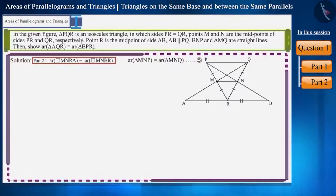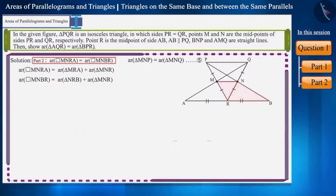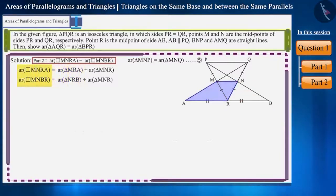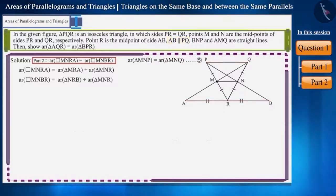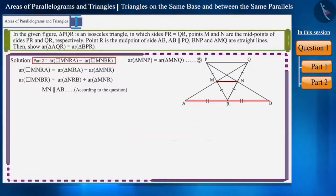Friends, if you look at these two quadrilaterals carefully, you will see that quadrilateral MNRA is made up of two triangles and quadrilateral MNBR is made up of two triangles. Triangle MNR is common in both. So, if we prove that triangle MRA and triangle NRB are congruent, then we can say that the areas of these two quadrilaterals are also equal. It's given that AB is parallel to PQ, and we know that MN is also parallel to PQ. Therefore, MN and AB will also be parallel to each other.